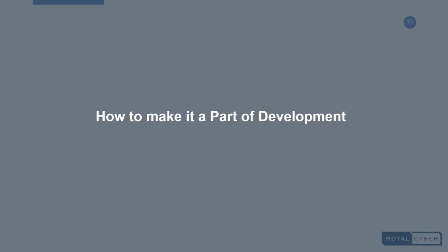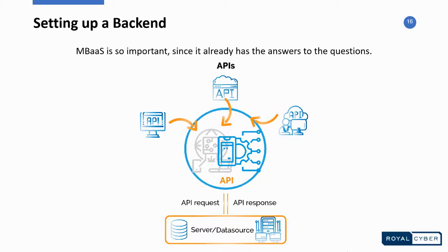How do you make this part of development? When setting up a back-end, it takes more than just integration of a few APIs, since you also need to answer important questions such as: what would be the right SDK? What is an optimized approach to integrate a REST API? And most importantly, what would the team size be — how many members would you need? That's where Mobile Backend as a Service is so important, since it already has the answer to those questions.